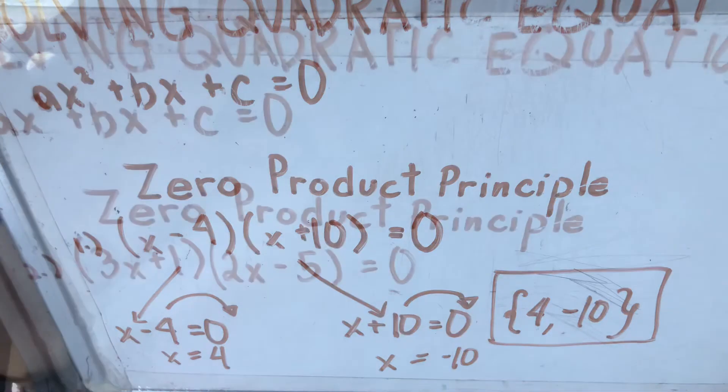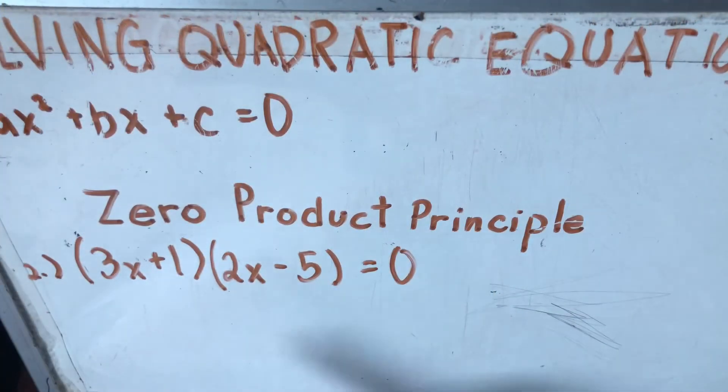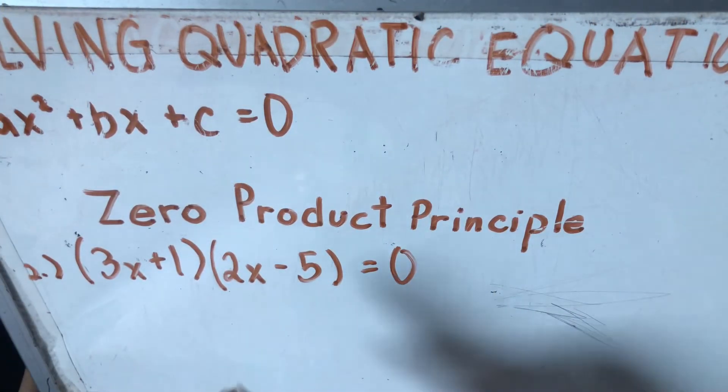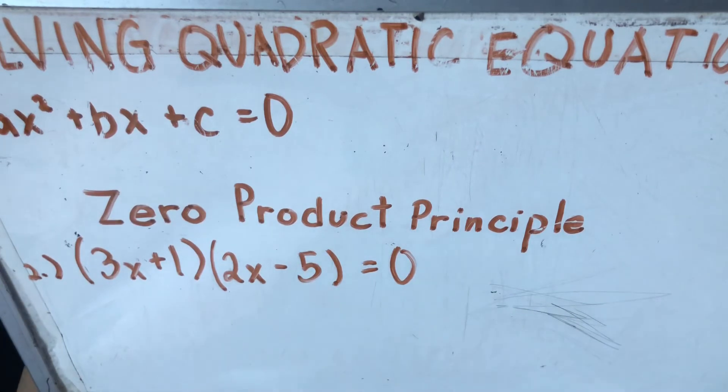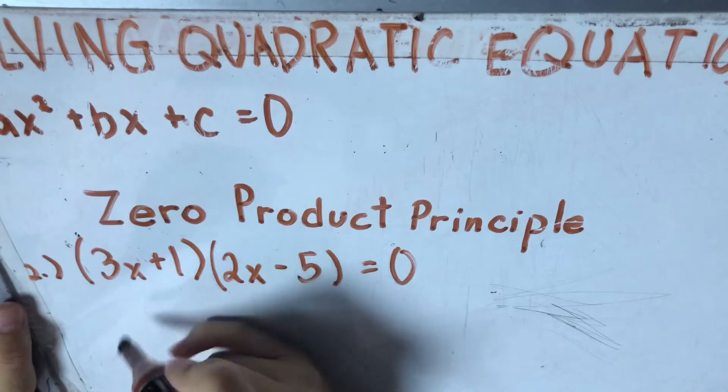Let's move on to the next question. Number 2: (3x + 1)(2x - 5) = 0. So katulad nung kanina, paghiwalayin natin.